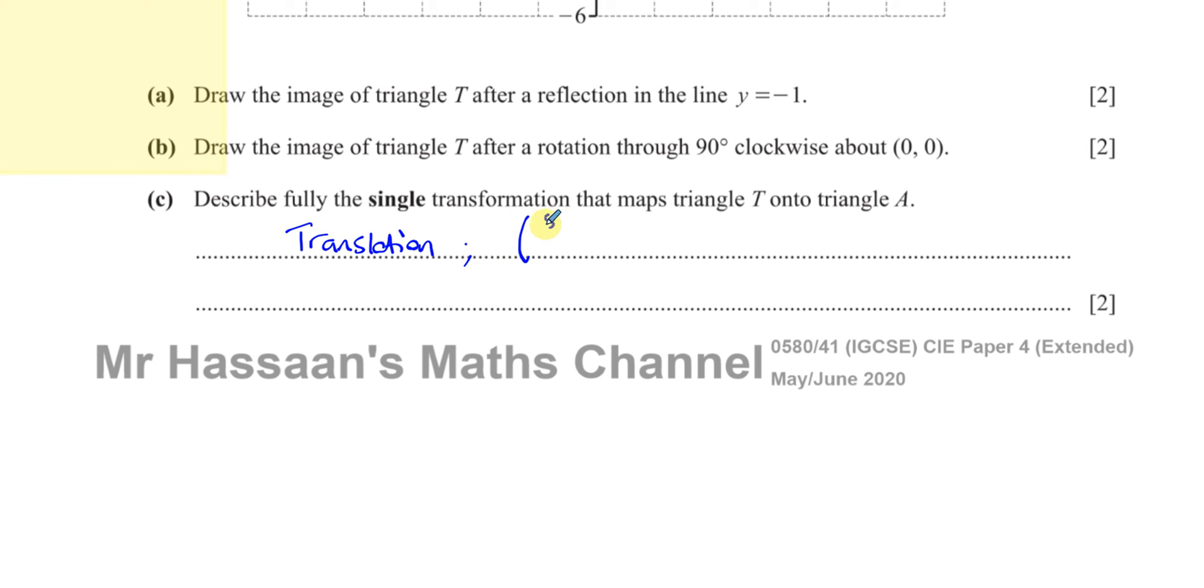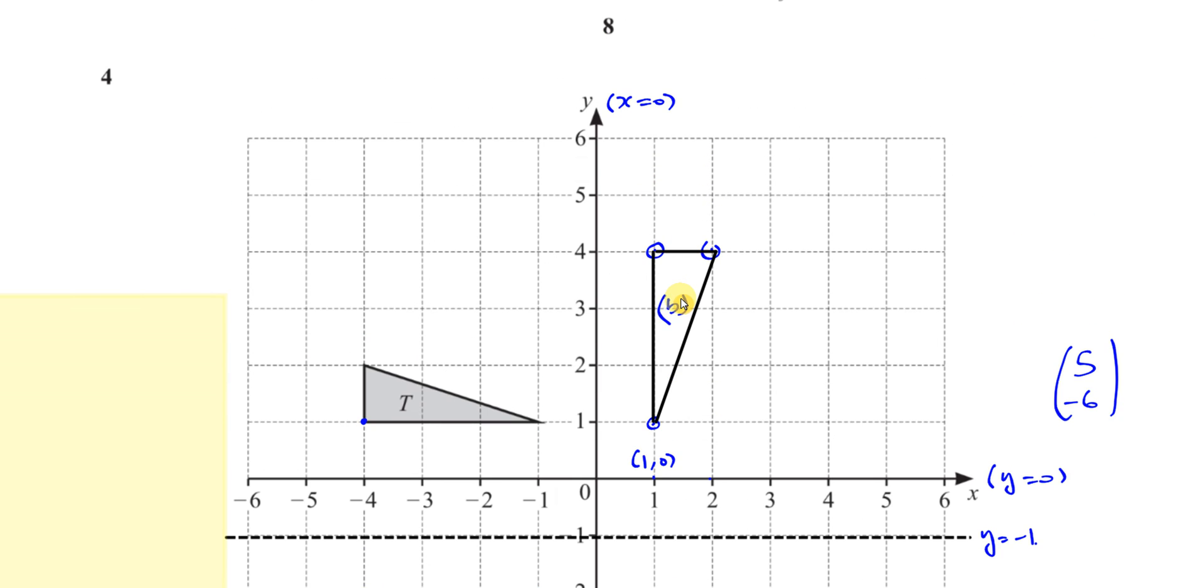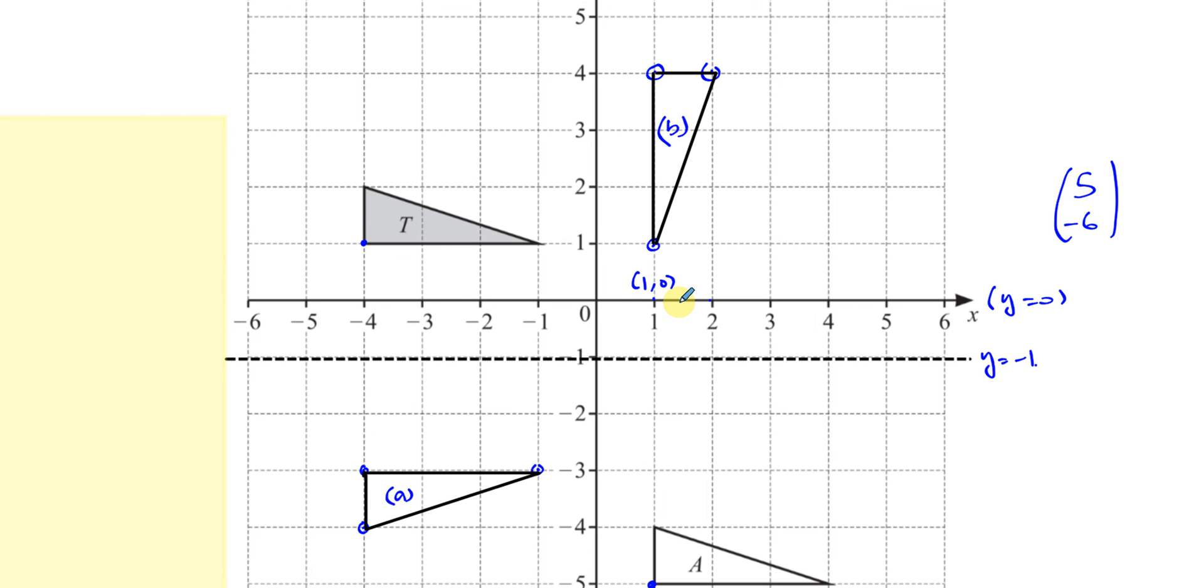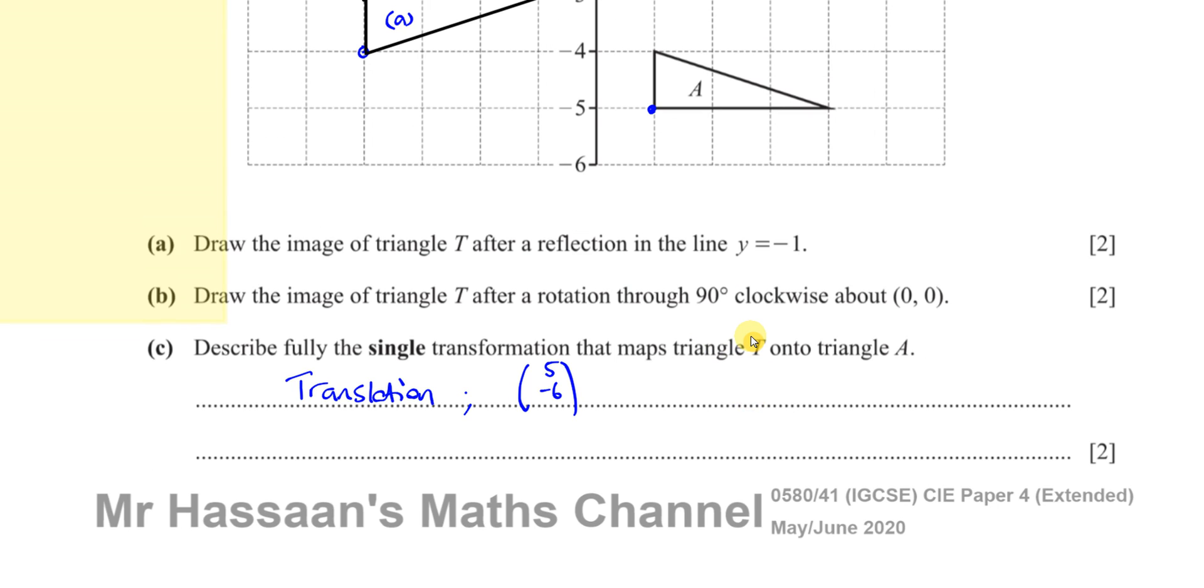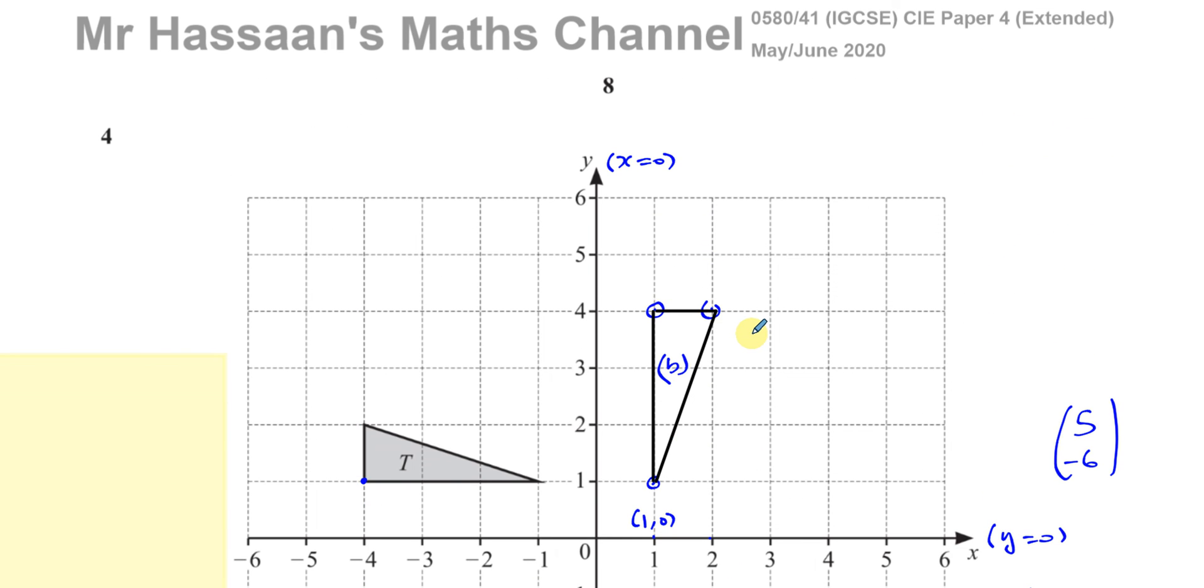So that is enough for you to get the full marks. When it says describe fully, they don't want you to just say translation. They want you also to describe what vector that translation is. And there we have the marks for this question, question number 4. Again, pretty straightforward. Nothing really too complex about that. So that's the question on transformations. Thank you for watching. Other questions on this paper, from this particular paper, this 4-1, variant 1, paper 4, can be found in this playlist that will be over there. And in this playlist, you'll find questions to do with transformations. And you can subscribe to my channel by clicking on this link. Thank you for watching and see you soon.